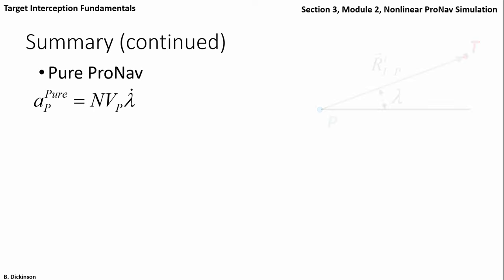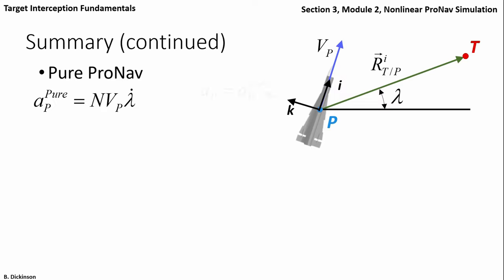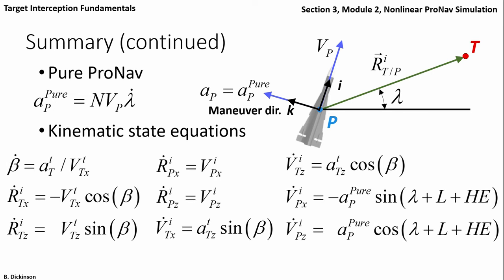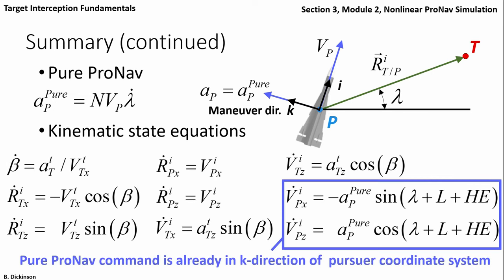Finally, pure pronav. The pure pronav command is perpendicular to the pursuer velocity vector, so it's already aligned along the maneuver direction. We simply resolve AP-pure in the inertial coordinate system through the DCM involving lambda, lead angle, and heading error — the angle between the pursuer coordinate system and the inertial coordinate system. Therefore AP-pure is preserved in this implementation.